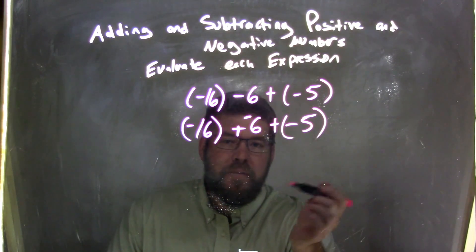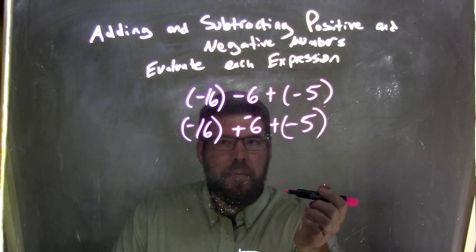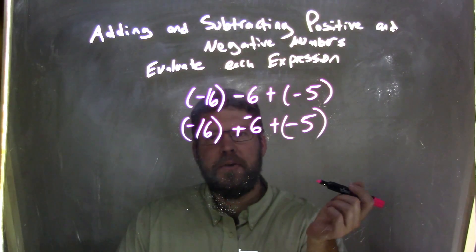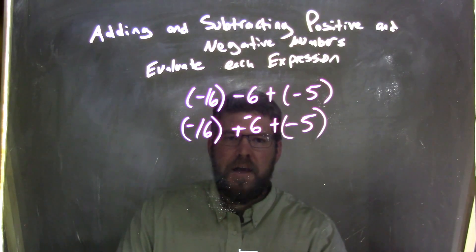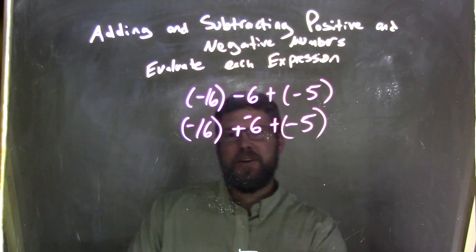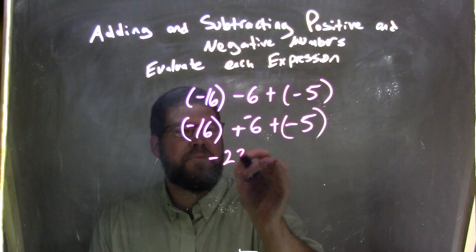Remember, we're all moving to a more negative number. So what am I going to do here? Let's go left to right. Negative 16 plus negative 6 comes out to be negative 22.